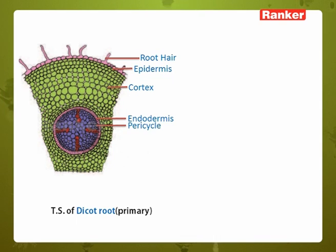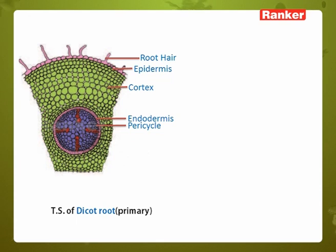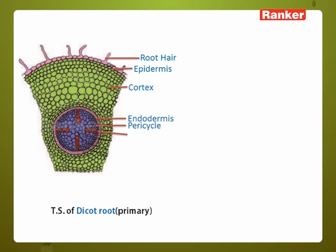Next layer is pericycle. In pericycle, one to three layers are present. It is either uniserate in maximum roots or may be multiserate in some roots. On the inner side of the tissue system, that is the vascular tissue system, we have xylem and phloem arranged alternately in radial bands.